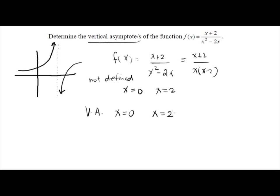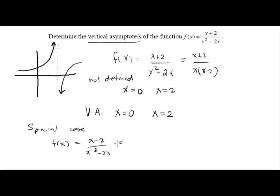There are some exceptions to the rule — cases where you identify where the function is undefined and it turns out not to be a vertical asymptote. As a special case, consider a slight change to the given function: what if the numerator is (x − 2) and the denominator is still x² − 2x? Simplifying, this is (x − 2) / [x(x − 2)]. As you can see, (x − 2) cancels, and the function reduces to 1/x.